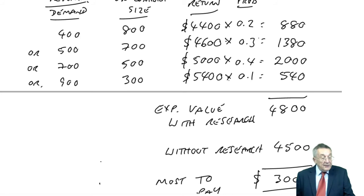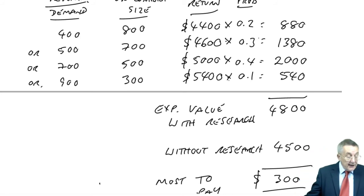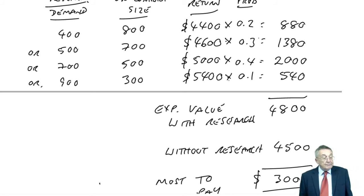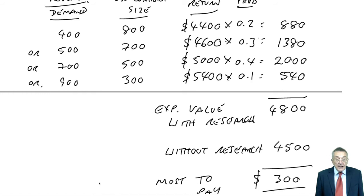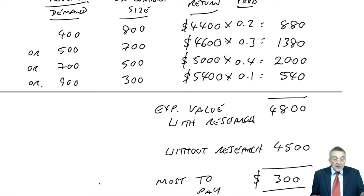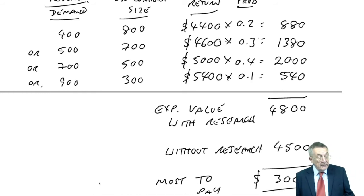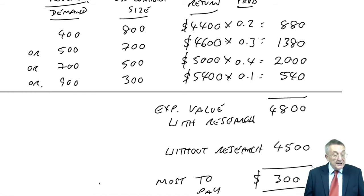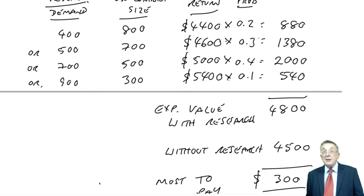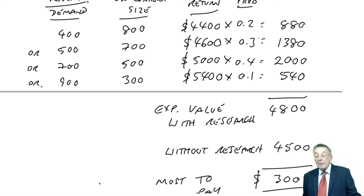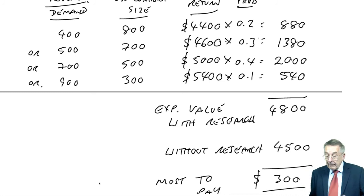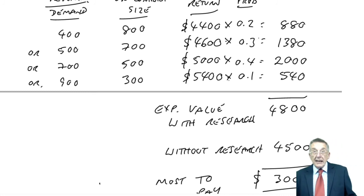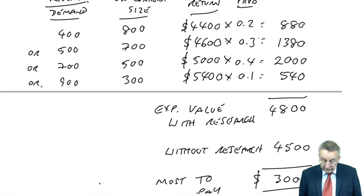All right, we've finished exercise two. In the next lecture, we'll go through something slightly related but a bit different — decision trees — which is on the next page. So next lecture: exercise three.